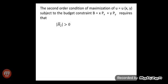The second order condition of maximization of utility function u = u(x, y) subject to the budget constraint requires that the determinant value of the bordered Hessian H̄₂ should be greater than 0. The bordered Hessian determinant is the 3×3 matrix with entries 0, gx, gy in the first row; gx, zxx, zxy in the second row; and gy, zyx, zyy in the third row.